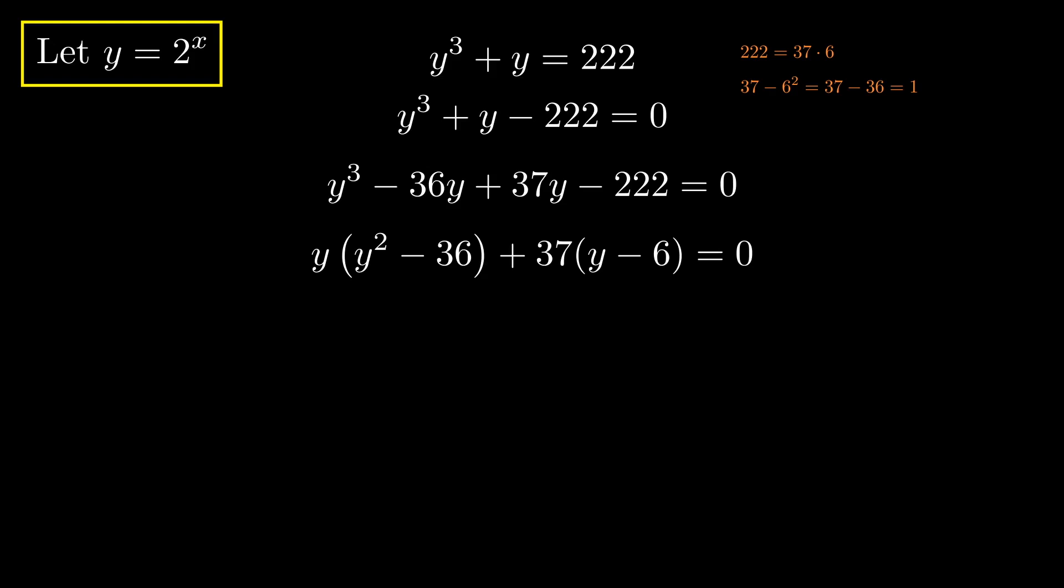This is typically what you have to do with factoring by grouping, but we have to go one additional step here. y squared minus 36 is a difference of squares. It factors into y plus 6 times y minus 6, and now we can see the magic happening.